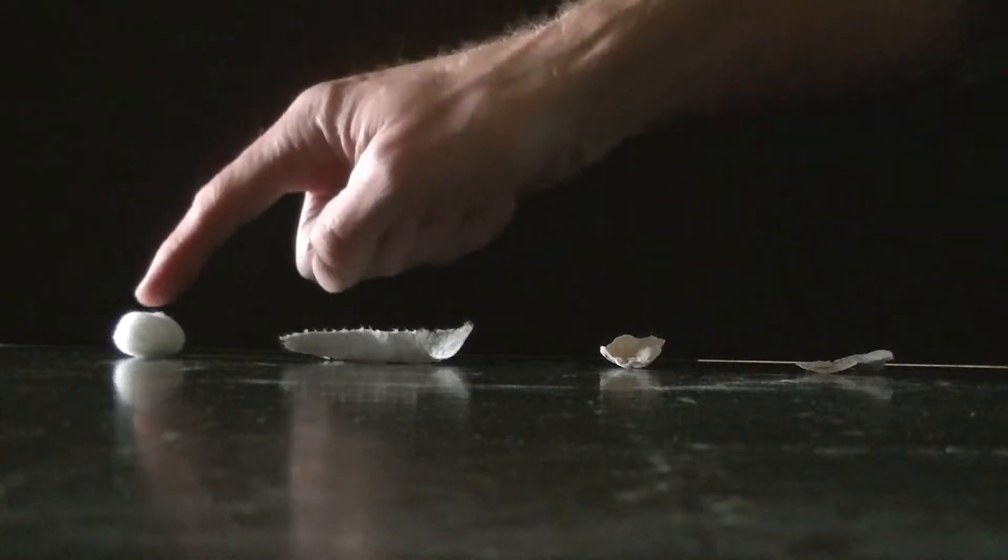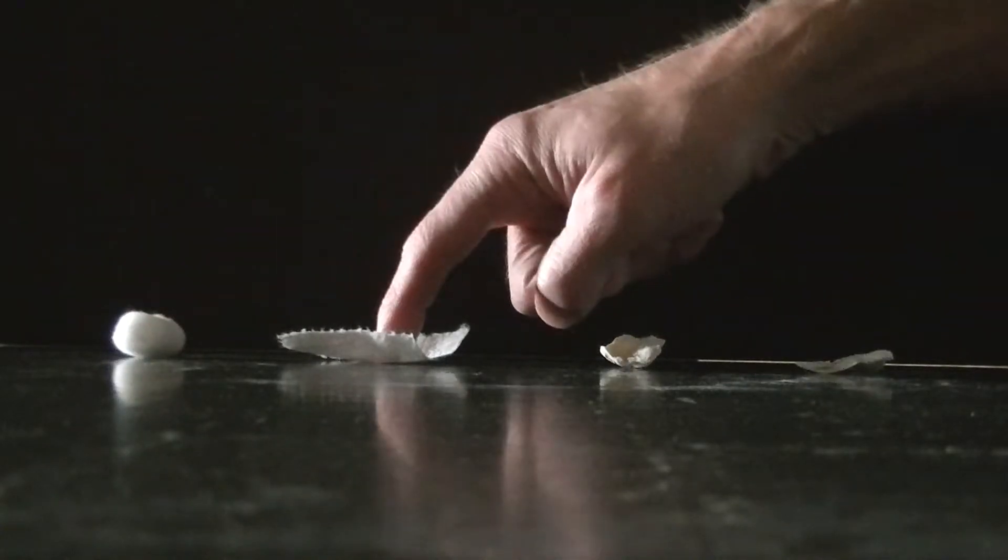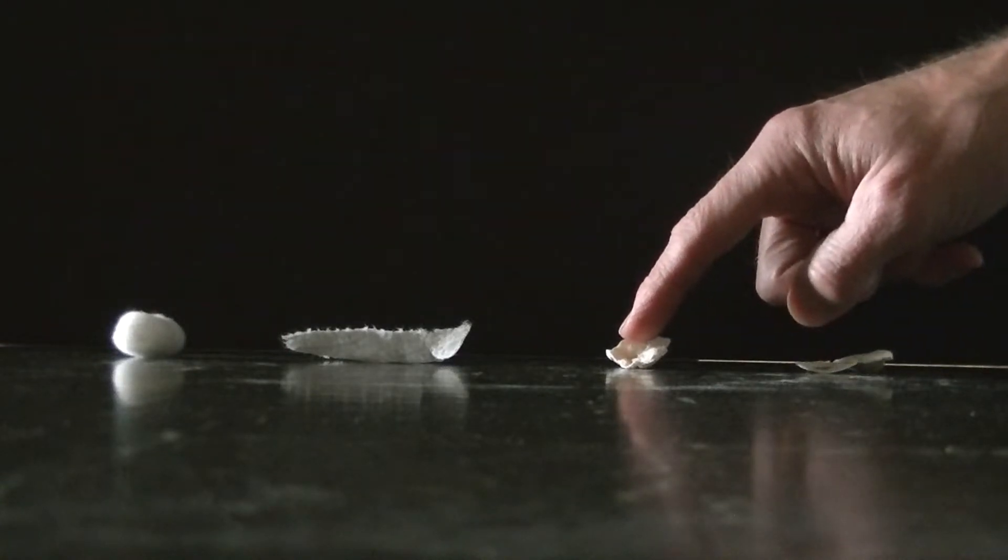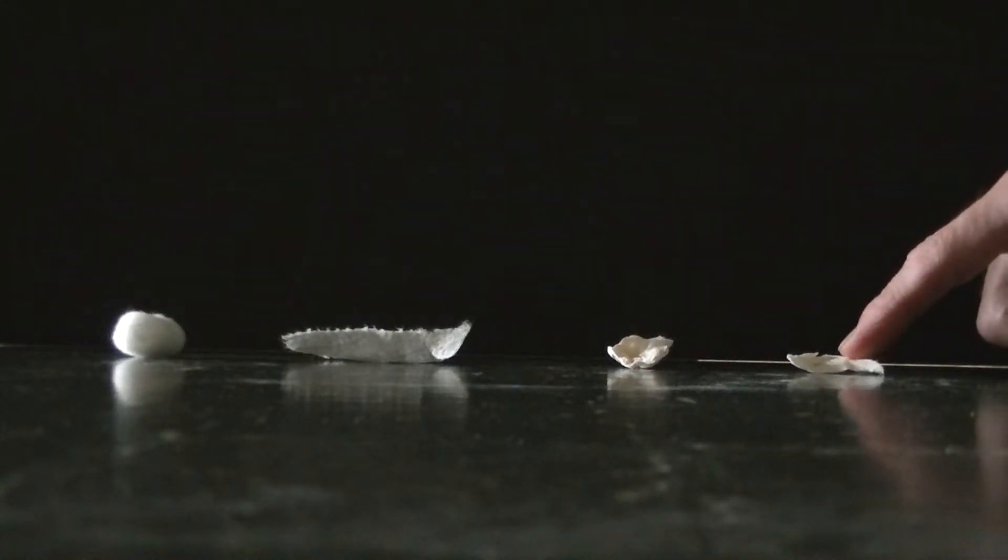Here I have a piece of cotton, a piece of paper towel. This is a piece of cotton that's been chemically treated. And this is a piece of paper towel that's been chemically treated.